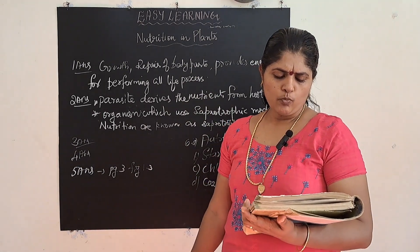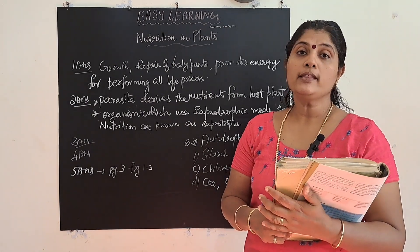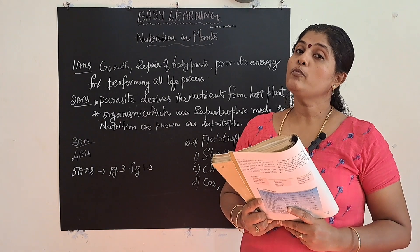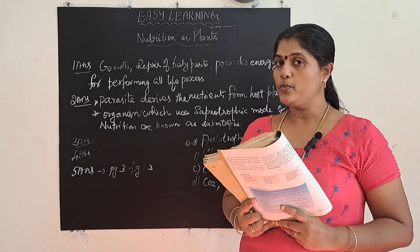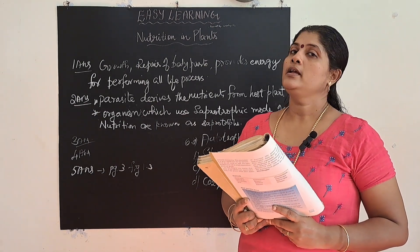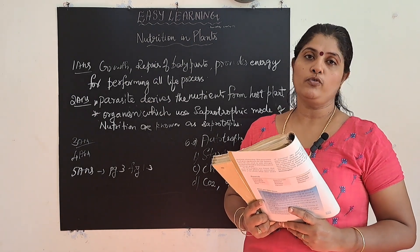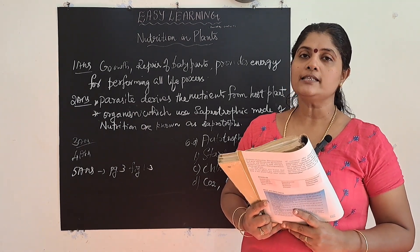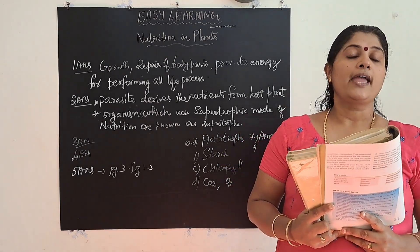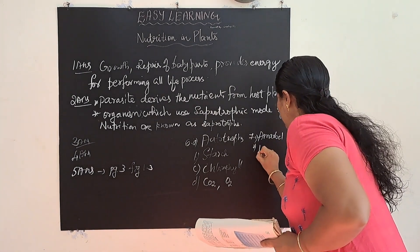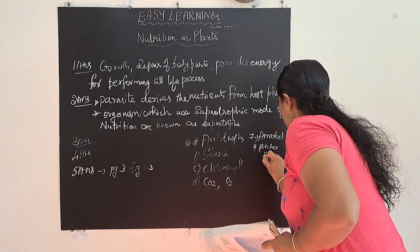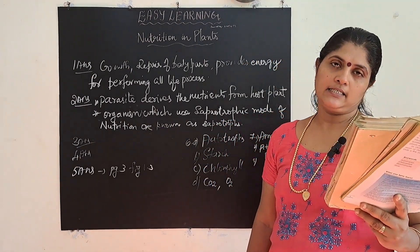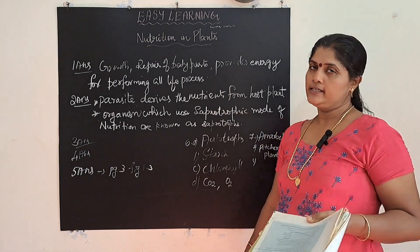Part B: the plant that has both autotrophic and heterotrophic mode of nutrition. Autotrophic mode means the plant can produce its own food, while at the same time it consumes other organisms — that is heterotrophic. These are the insectivorous plants. The example is the pitcher plant. Part C: the pores through which leaves exchange gases are the stomata.